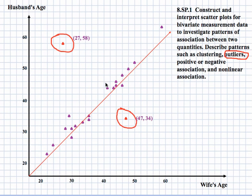Two points are confirmed as outliers because they are away from the other points and away from the pattern. One shows a wife aged 47 and a husband aged 34 — the wife is quite a bit older. The other shows a husband aged 58 and a wife aged 27 — the husband is quite a bit older.